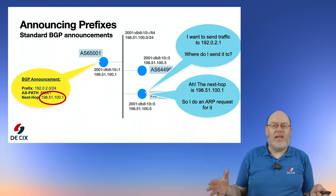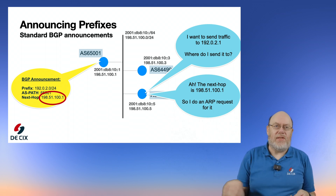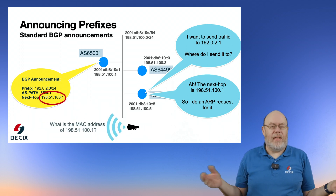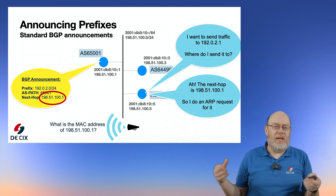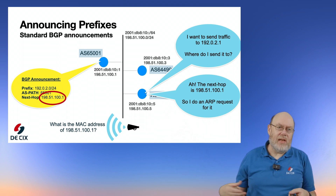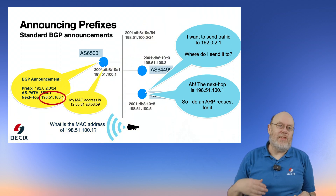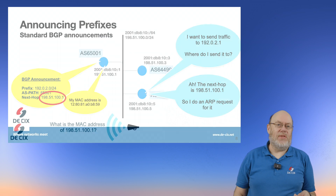What the router does next is use an ARP request to get the Ethernet address of that host. As we know in IPv4, ARP uses broadcast — the router broadcasts an ARP request to find out the MAC address. The host answers and sends its MAC address, so now the router knows where to send traffic.